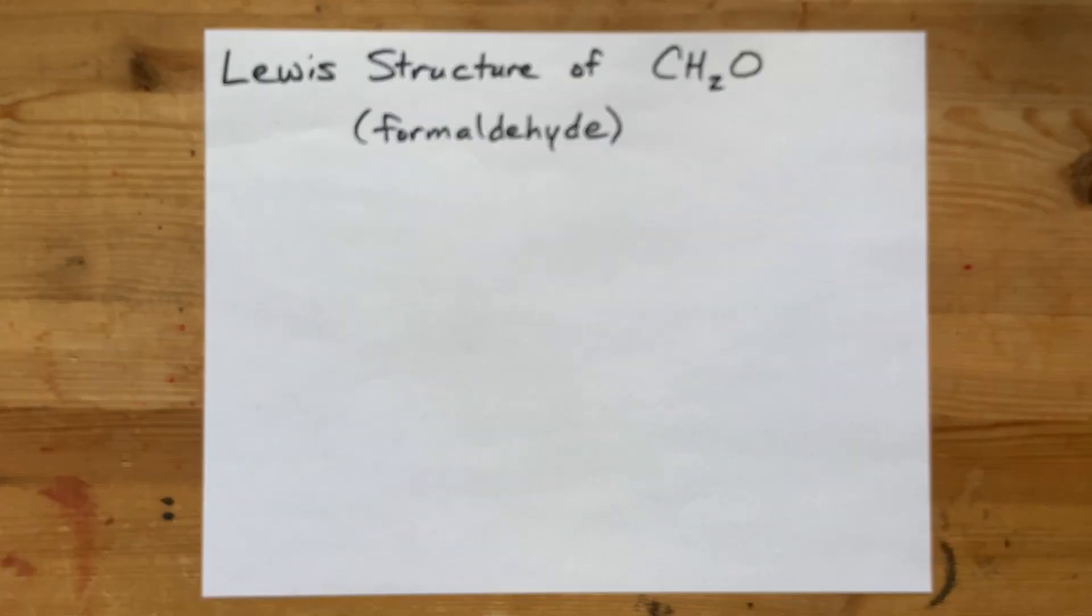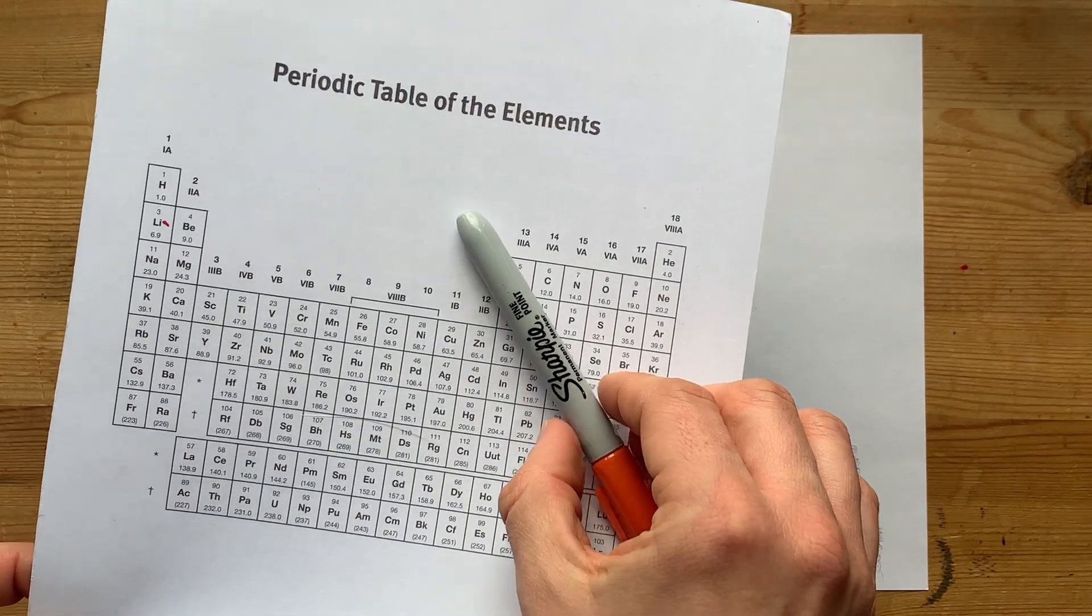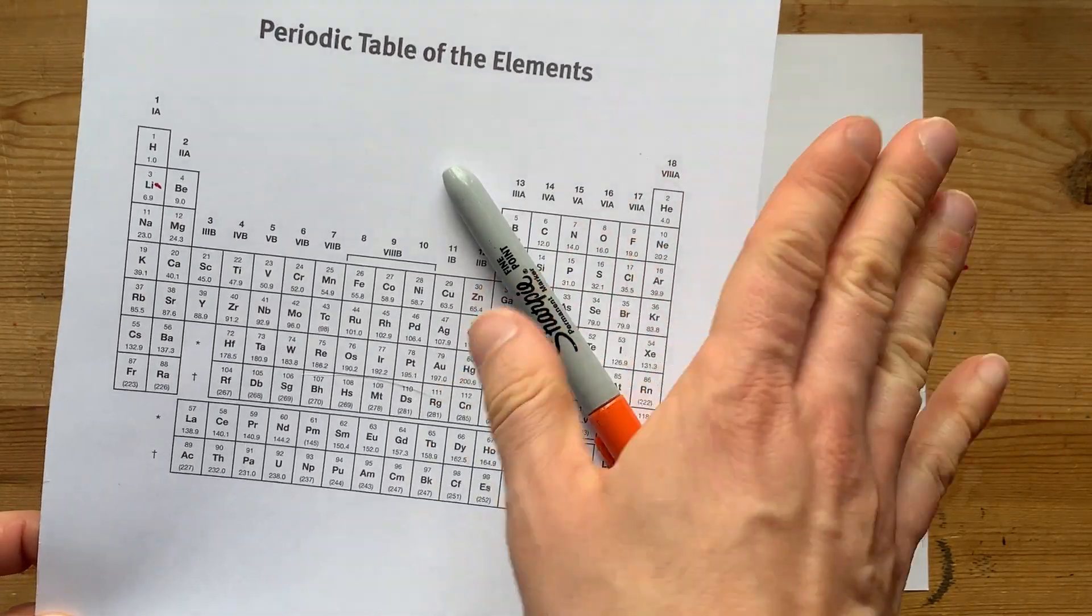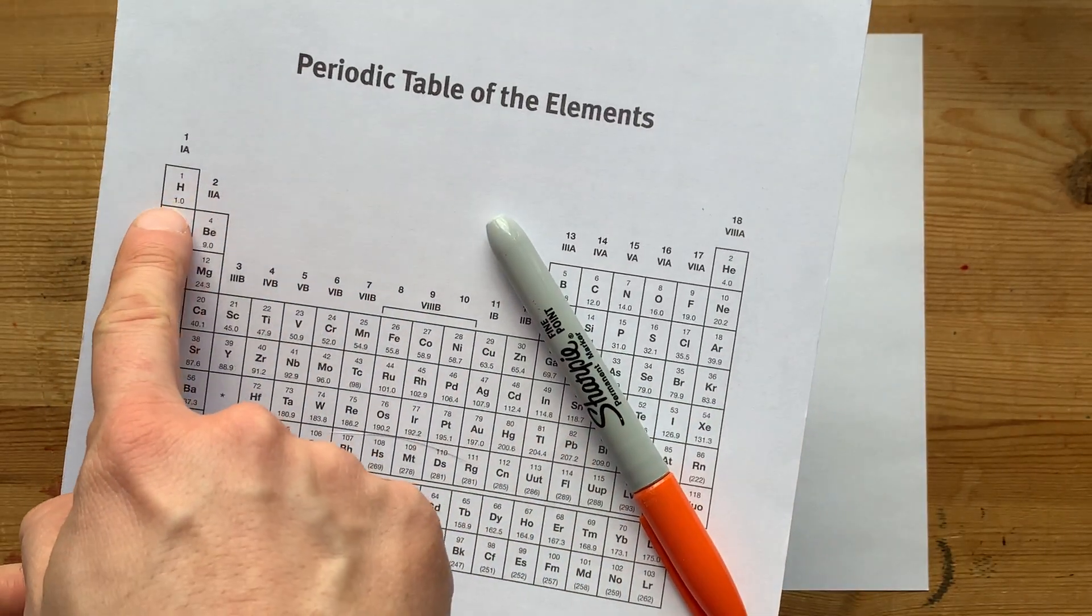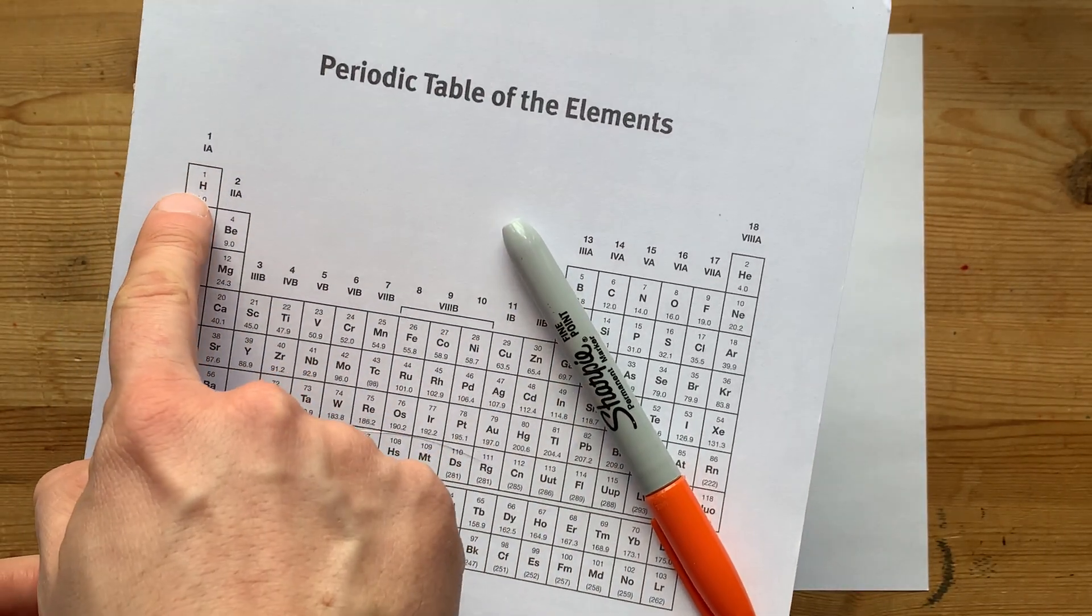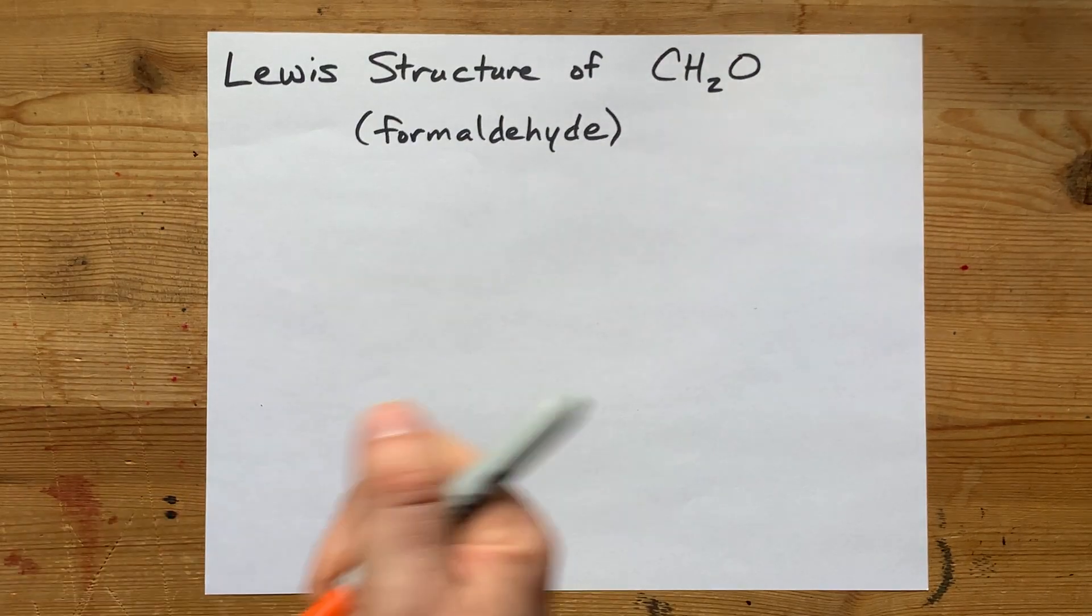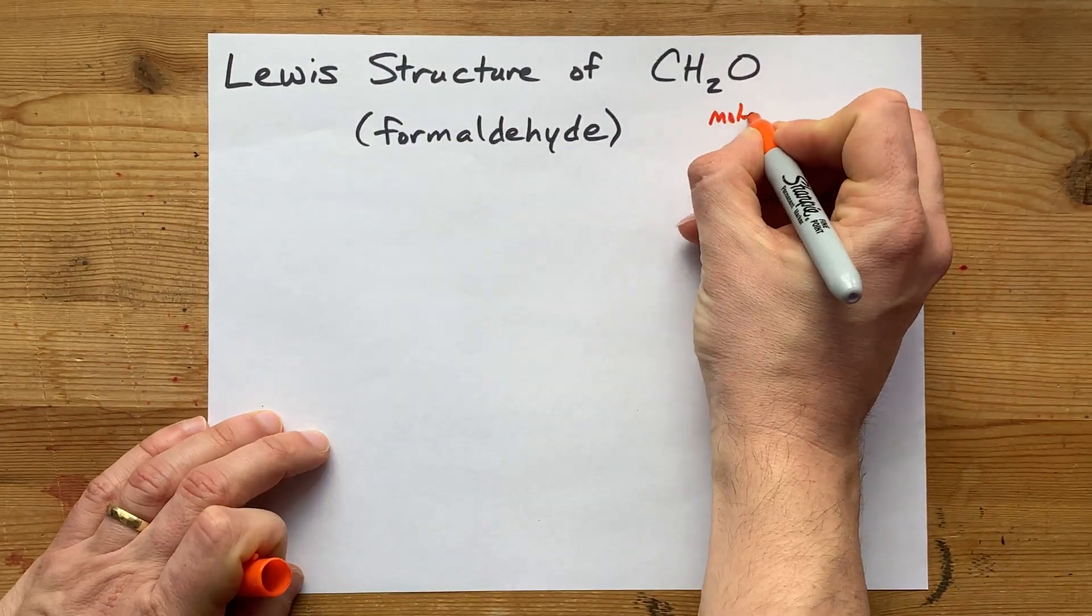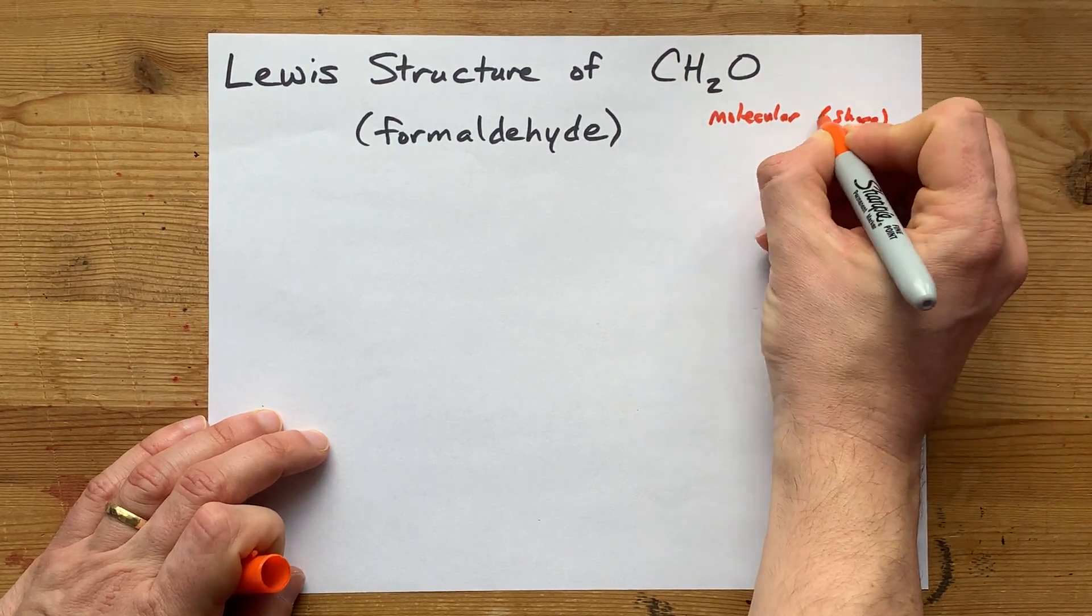First thing to note is that carbon, hydrogen, and oxygen are all non-metals. Carbon and oxygen come from the top right-hand corner of the periodic table. That's where you find the non-metals. And hydrogen, by definition, is a non-metal. It just happens to be written over here. When non-metals combine, they form a molecular compound, which is a sharing of electrons.